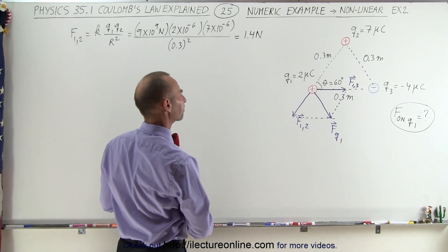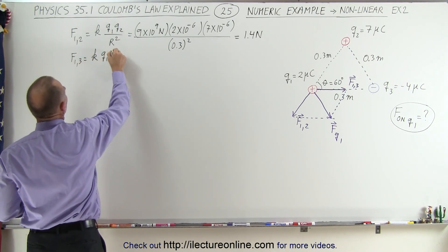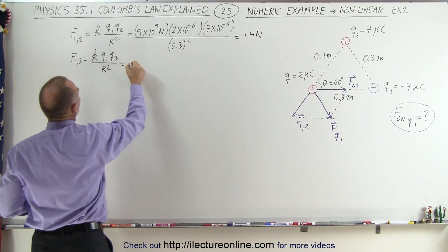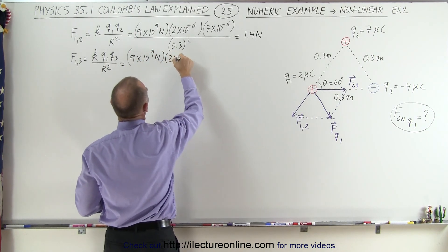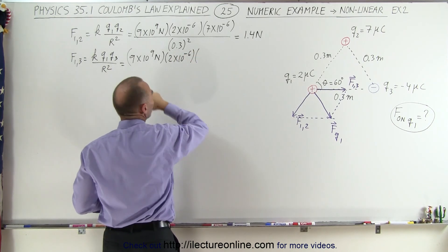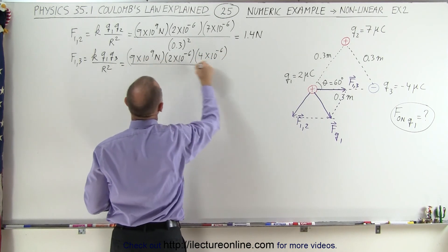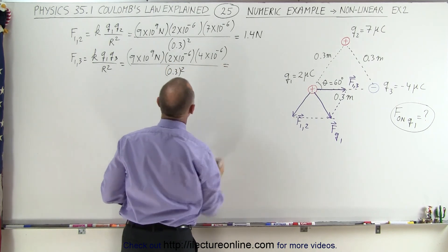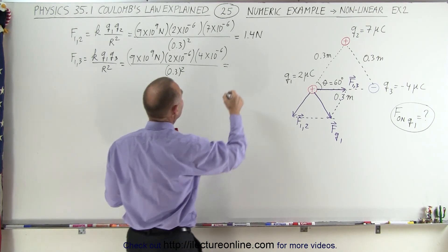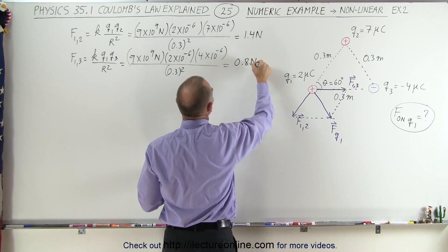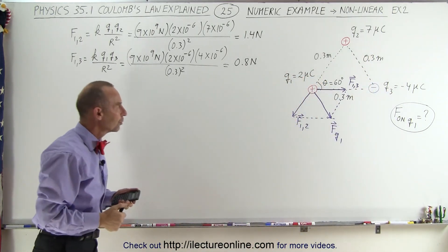Next, the force between 1 and 3. That's K times Q1 times Q3 divided by R squared. So we have 9 times 10 to the 9th Newtons, times Q1 which is 2 times 10 to the minus 6, times Q3 which is negative 4 microcoulombs, but we don't care about the negative because we only want the magnitude, all divided by 0.3 squared. Multiplying times 4 and dividing by 7 gives 0.8 Newtons for the magnitude of that force. Obviously, since Q3 has a smaller magnitude, it's going to have a smaller effect on Q1.